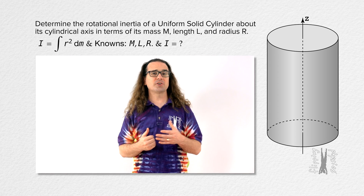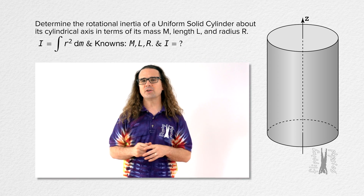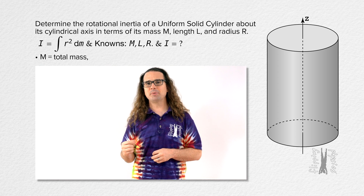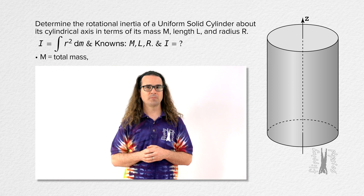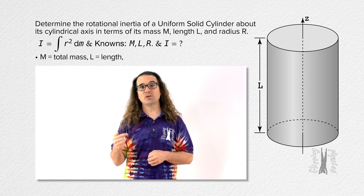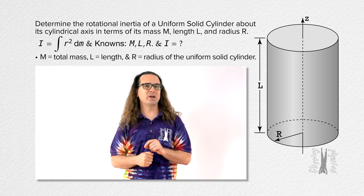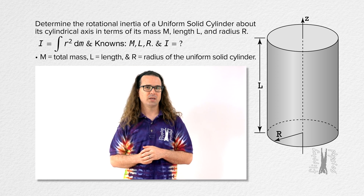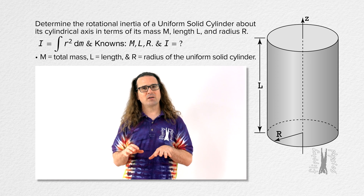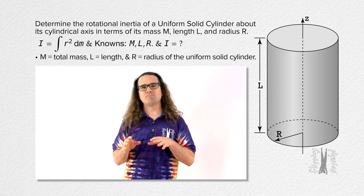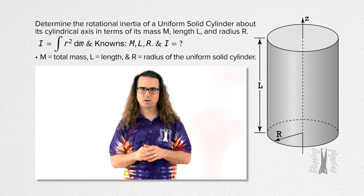Let's make sure we understand some things before we begin solving this problem. Capital M is the total mass of the solid cylinder, capital L is the length of the solid cylinder, and capital R is the radius of the solid cylinder. These may seem obvious right now; however, there are going to be more similar variables soon.